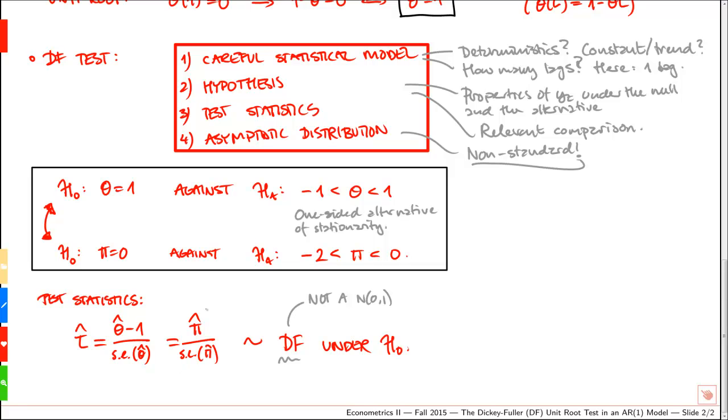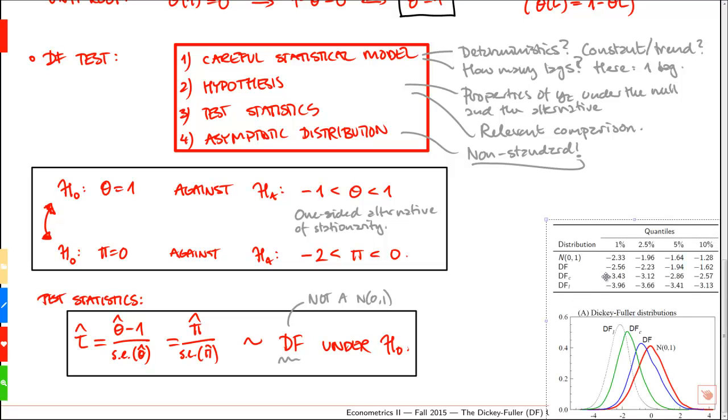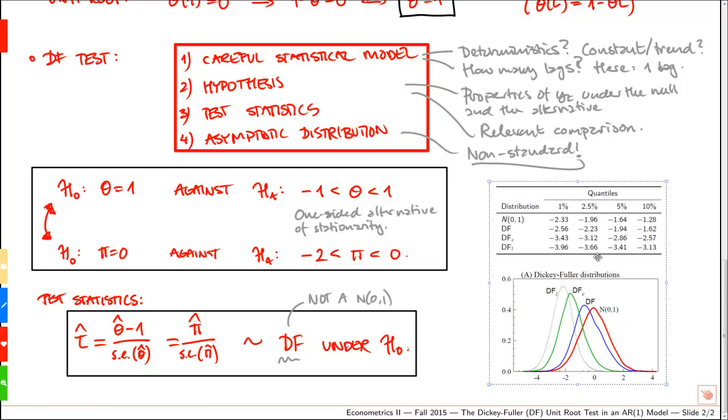And second, note that the t-test on pi is reported by all standard output, so we get the test statistic in standard output of any econometric software. The only thing we have to take into account is that the distribution under the null is different.